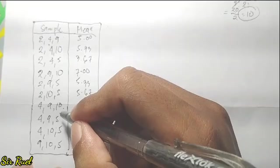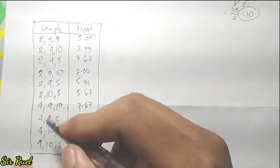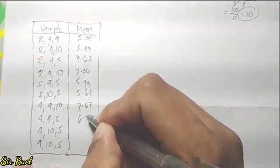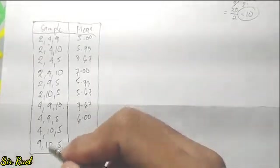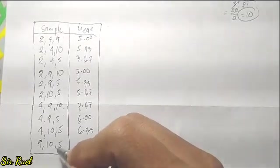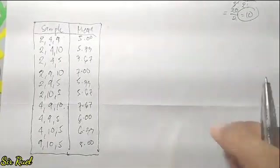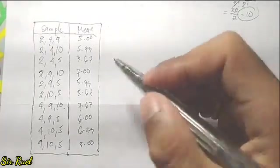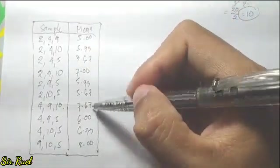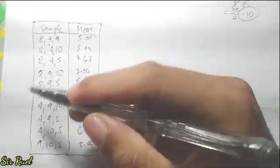Continuing: 4, 9, 10 divided by 3 = 7.67. For 4, 9, 5: 18 ÷ 3 = 6.00. For 4, 10, 5 ÷ 3 = 6.33. And 9, 10, 5: 24 ÷ 3 = 8.00. These are all the sample means.